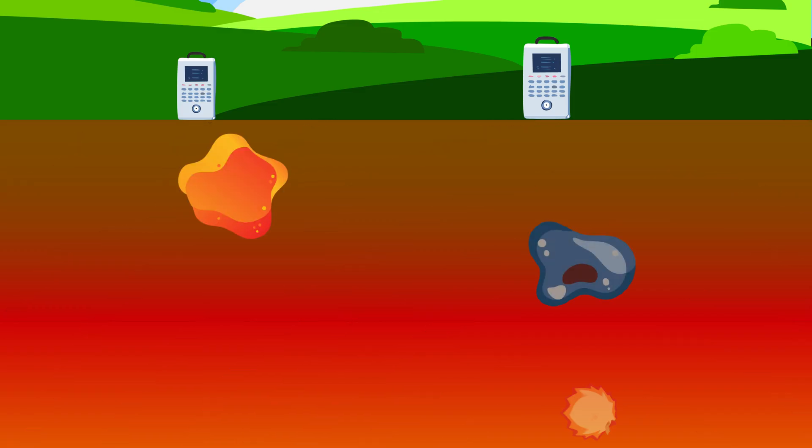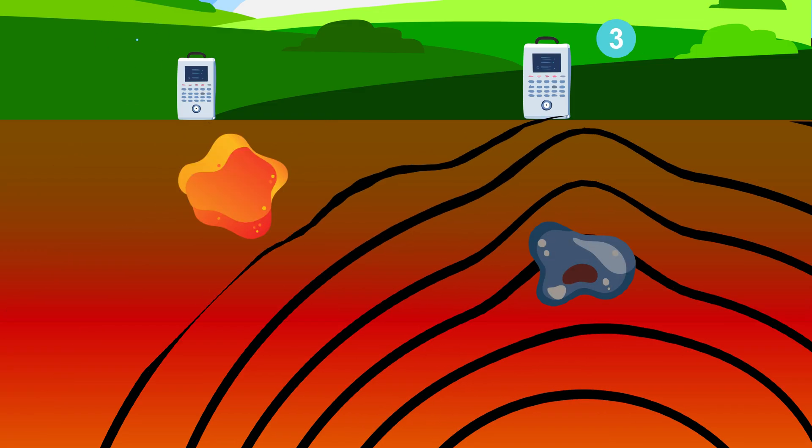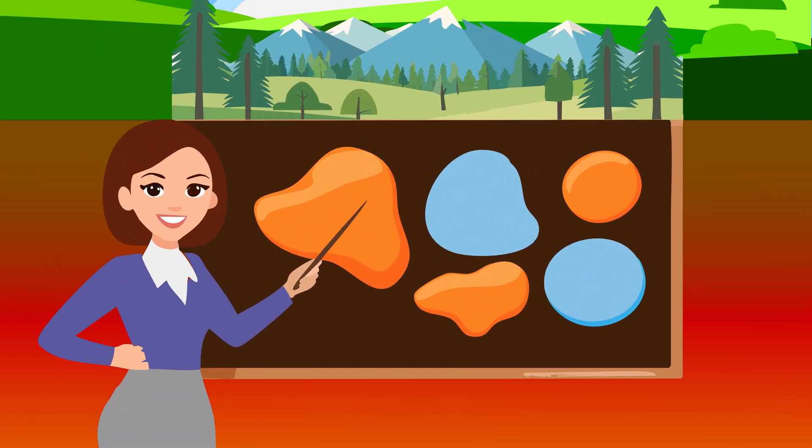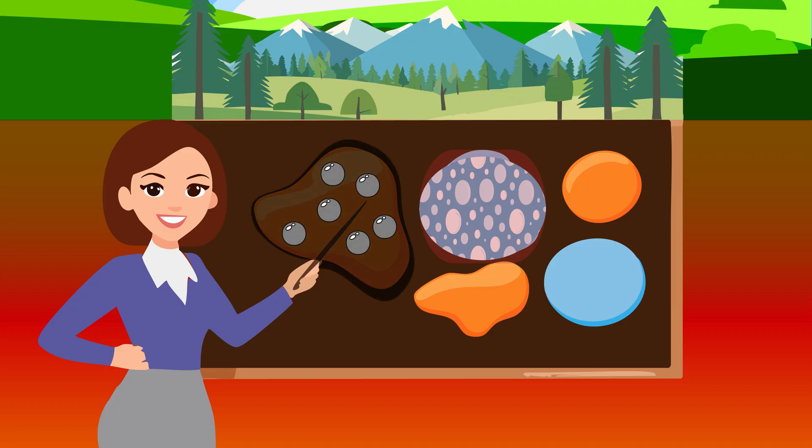By measuring the time it takes for these waves to arrive at different seismometers, scientists can create detailed images of what the Earth looks like beneath the surface. These images can help us identify hot spots for geothermal energy, safe places to store carbon dioxide, or zones rich in minerals we need for technology.